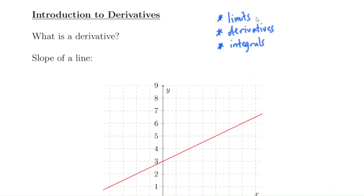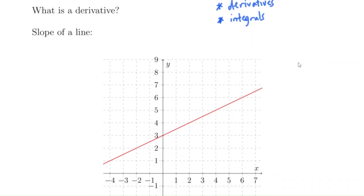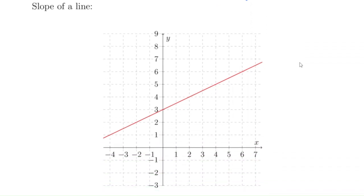So what is a derivative? There are a few ways we can think about derivatives, but we're going to begin with the idea of slope. Later we'll talk about derivatives in terms of rates of change, but for now we're going to think about it in terms of slope.